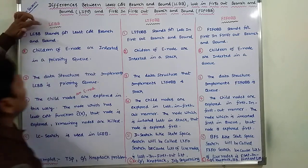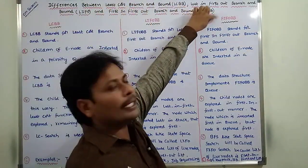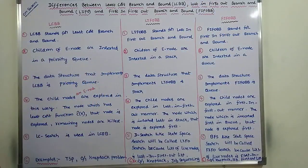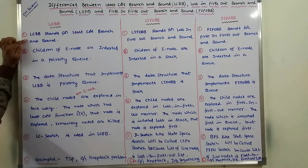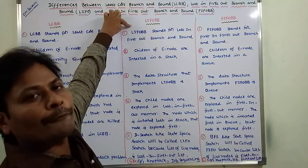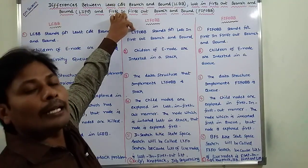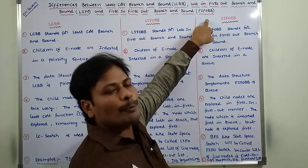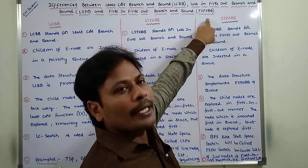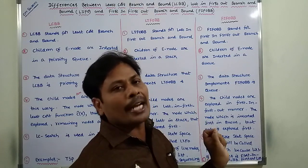The first one is LCBB, second one is LIFOBB, third one is FIFOBB. LCBB stands for least cost branch and bound. LIFOBB stands for last in first out branch and bound. FIFOBB stands for first in first out branch and bound.